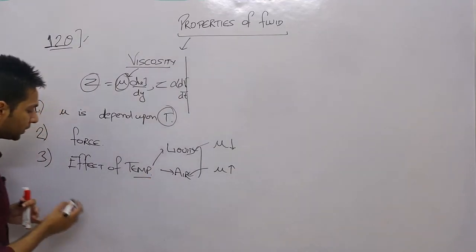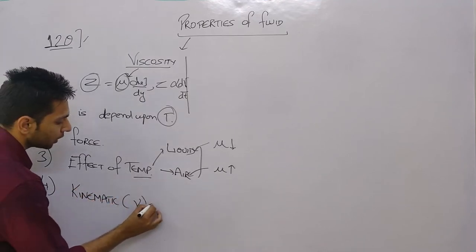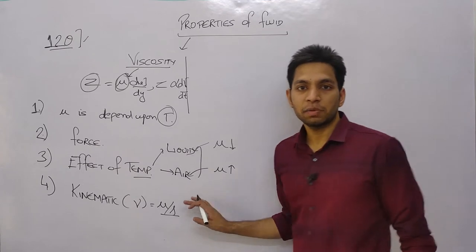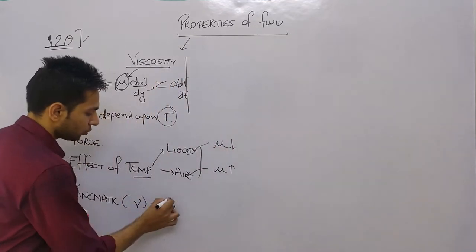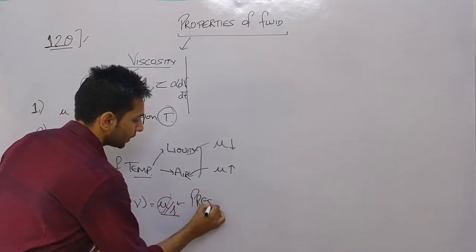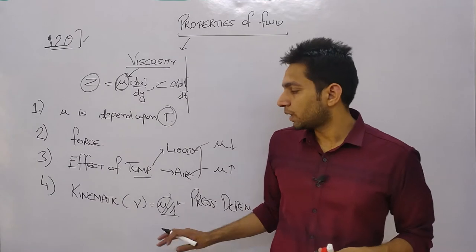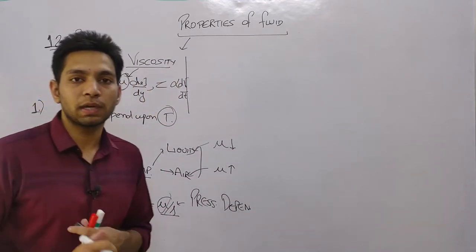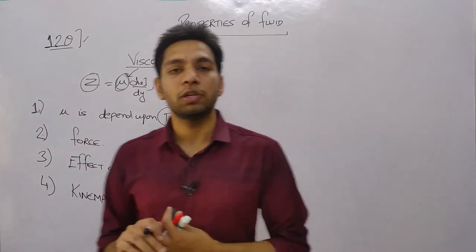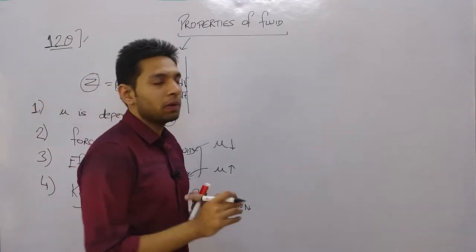After the effect of temperature, the next question that comes is from kinematic viscosity, denoted by nu. Its formula is mu divided by rho. Kinematic viscosity is affected by temperature since it is a function of mu, and it is also affected by pressure. You need to remember this key point.